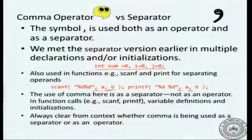As an operator, the comma has a particular value; as a separator it does not do anything other than saying this first and then this. We have seen several operators in C and discussed the concepts of precedence and associativity. What is important is: given the precedence and associativity tables, can you understand an expression, see whether it is a valid expression, and if it is valid, what will be its value.